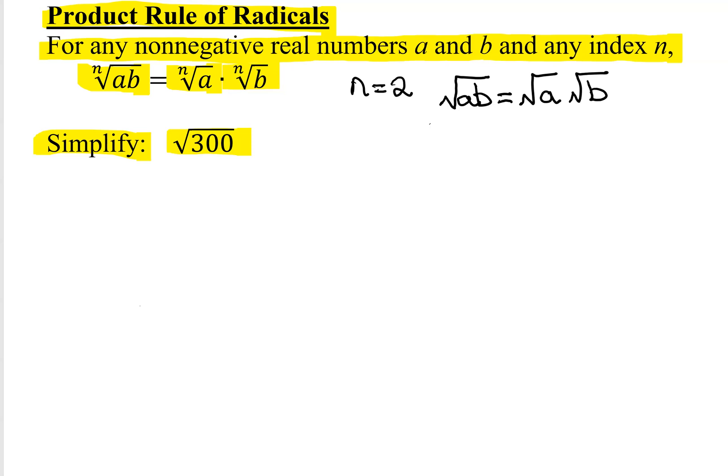In this problem, I need to break down 300 into its prime factors. So here's 300. What are two numbers that multiply to 300? There are lots of different ways of doing this. Since it ends in a 0, I'm going to say 10 times 30. Now, is 10 a prime number? No.